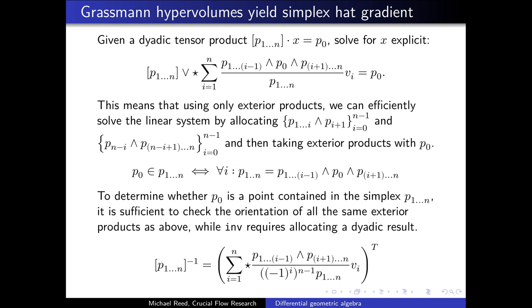Similarly, to determine whether a point p0 is contained inside of the simplex, it is sufficient to check the orientation of all the same exterior products as was allocated above. While the inverse requires allocating the full dyadic result, all the same exterior products can be used in all three of these calculations. And of course, the last one can be used to obtain the hat gradient of a simplex in any dimension, by only using exterior products.